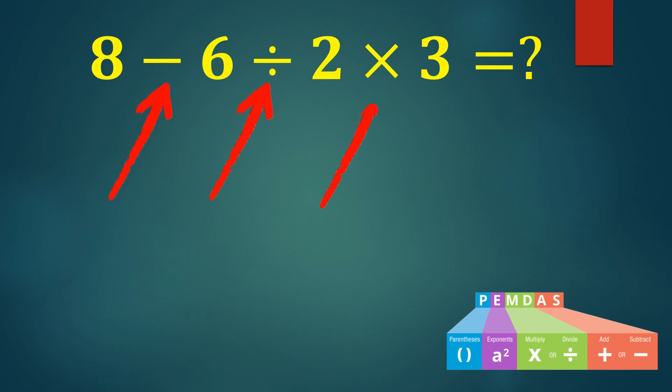According to PEMDAS, we handle multiplication and division first, moving from left to right. So 6 divided by 2 equals 3, and then 3 times 3 equals 9.